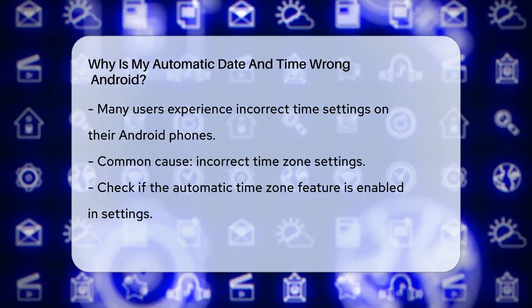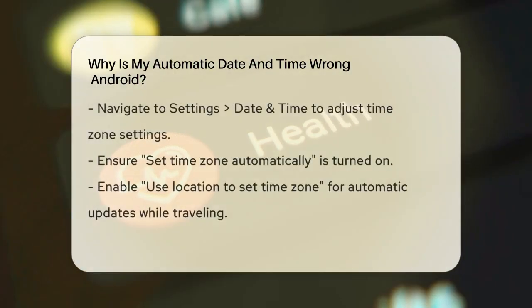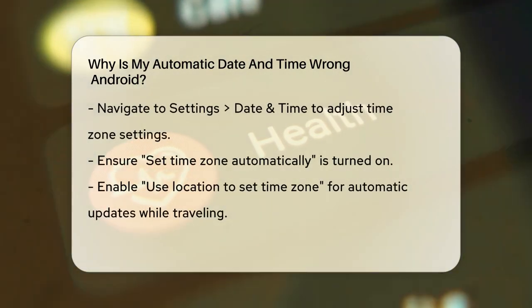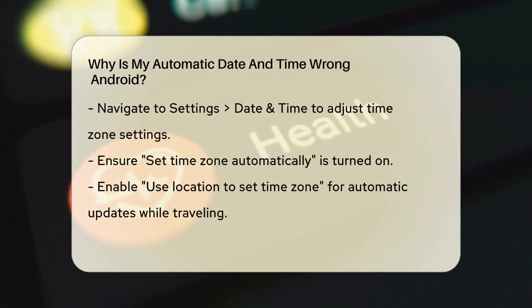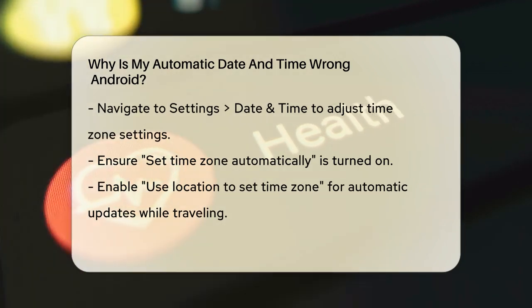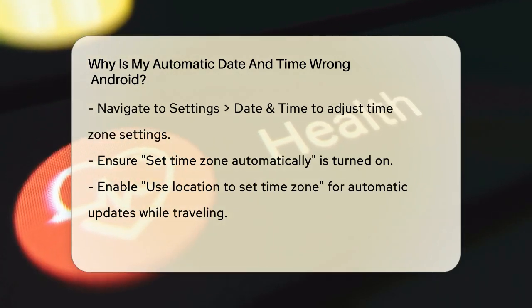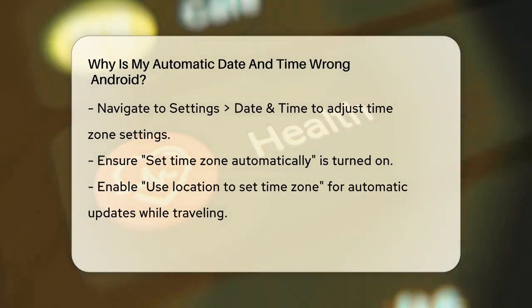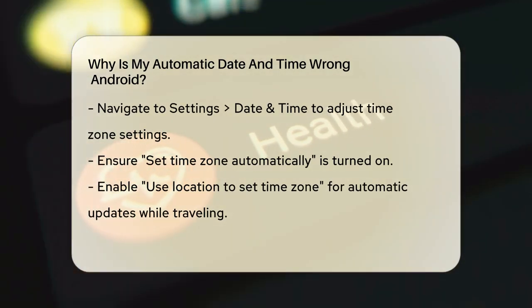To fix this, you need to go into your phone's settings. Tap the Settings app, or swipe down from the top of the screen and tap the gear icon. Then scroll down and look for the menu titled something like Date and Time.